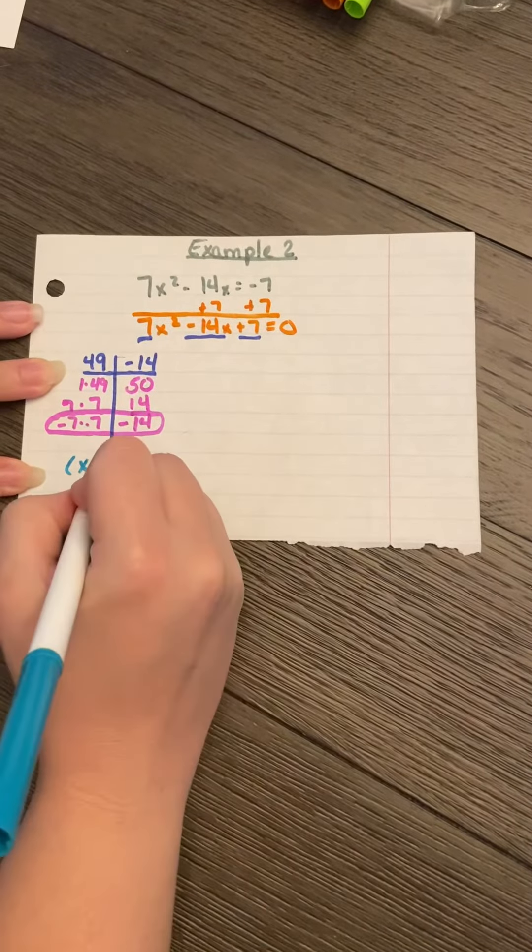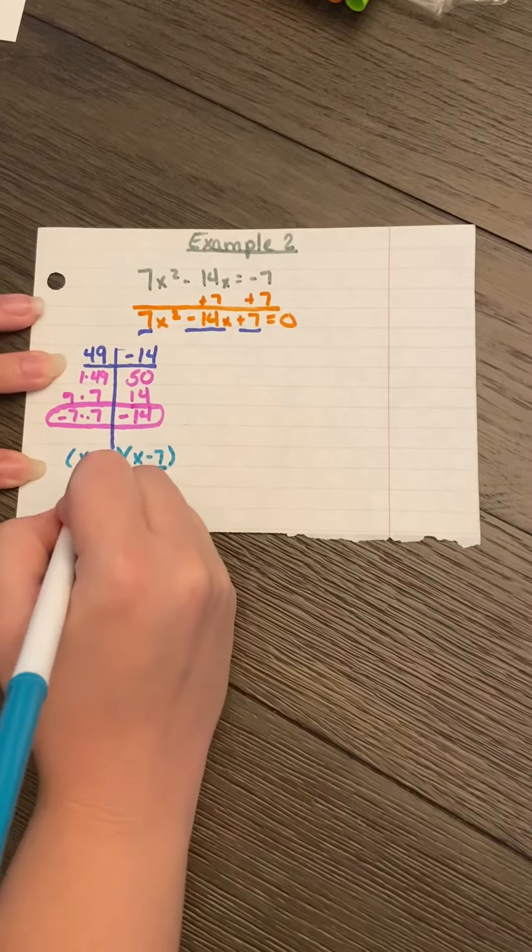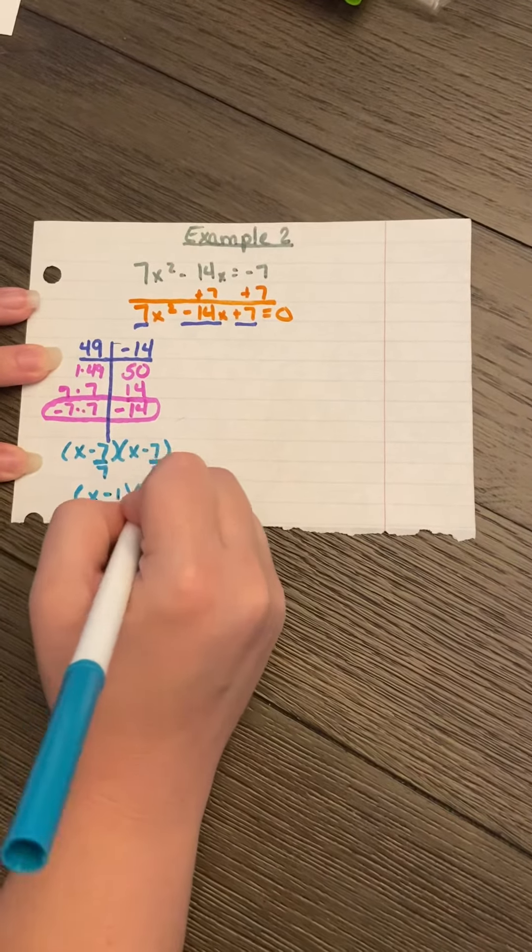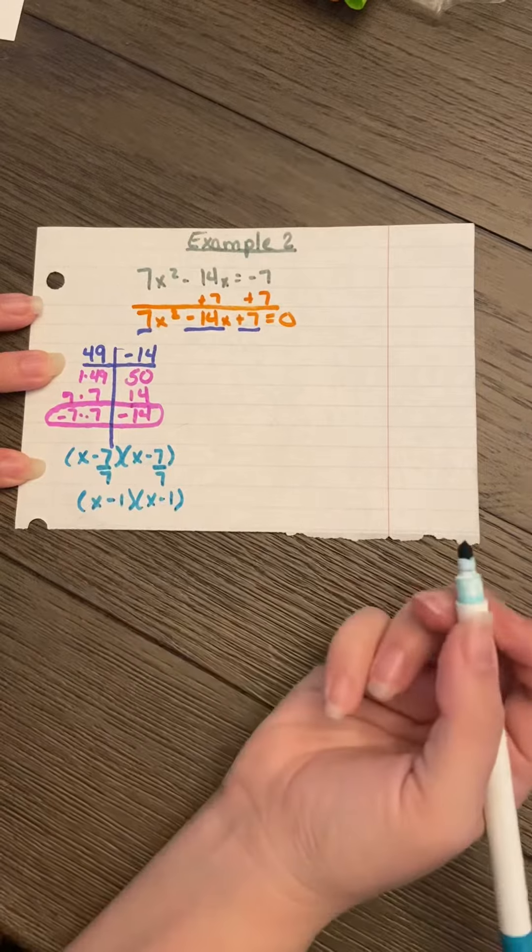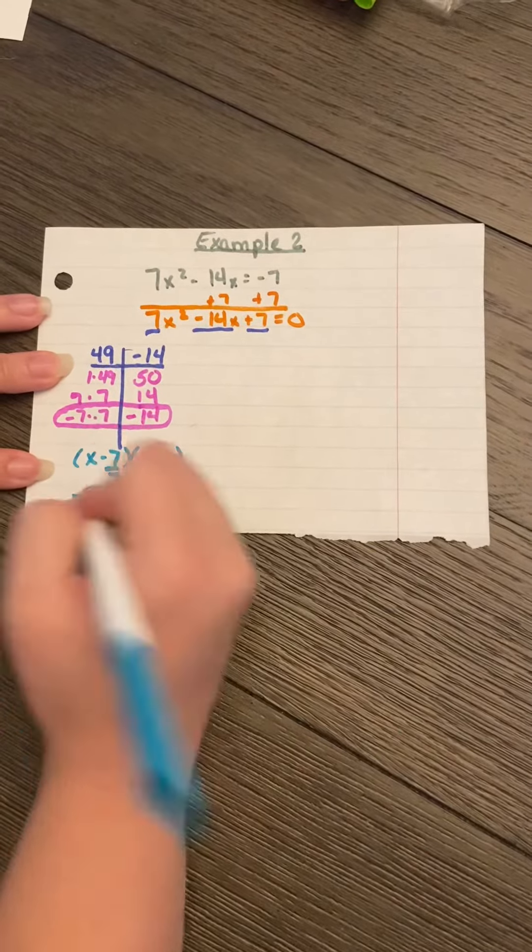Bring them down. And again, we want to divide by a. Which will give me x - 1 and x - 1. But let's not forget, since all of them had that 7 in common, we need to bring it out to the front.